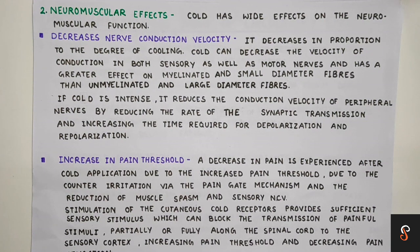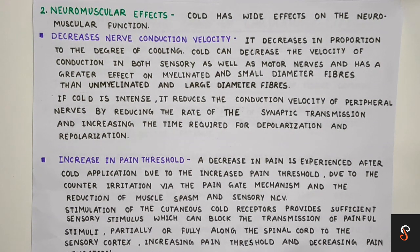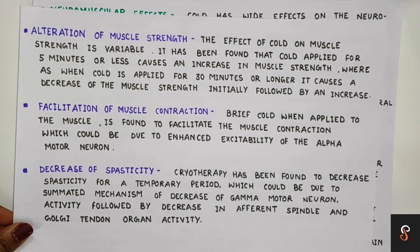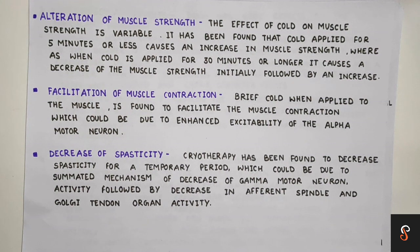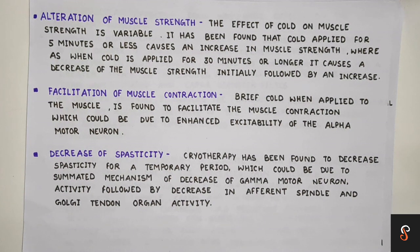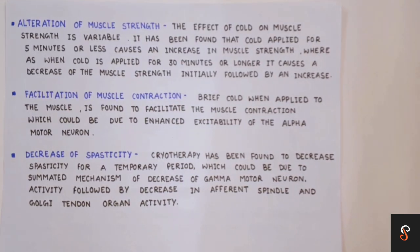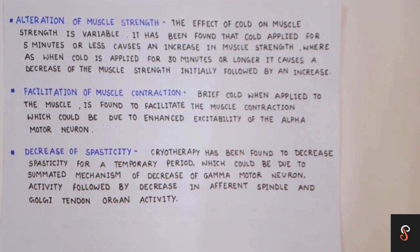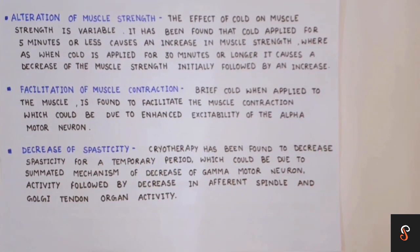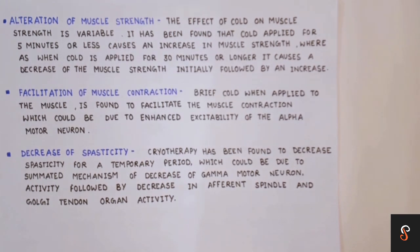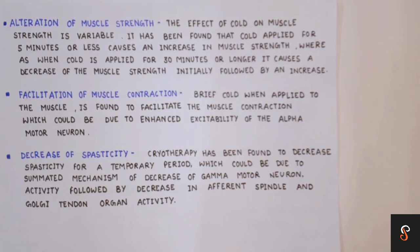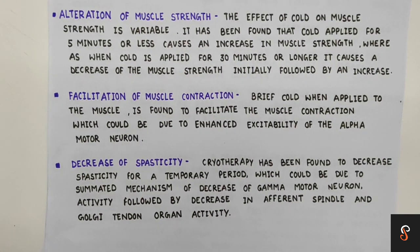Second is increase in pain threshold. When cold is applied, pain decreases due to increased pain threshold, counter-irritation through the pain gate mechanism, and reduction in muscle spasms and sensory nerve conduction velocity. Third is alteration of muscle strength — the effect is variable. Initially for about 5 minutes, cold therapy increases muscle strength, but when applied for 30 minutes or more, it causes a decrease in muscle strength. Fourth, short duration cold therapy facilitates muscle contraction, especially in muscles intact with lower motor neurons, by increasing excitability of alpha motor neurons, enhancing muscle tone. Prolonged cold application such as immersion reduces muscle tone to a greater extent.